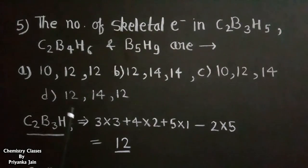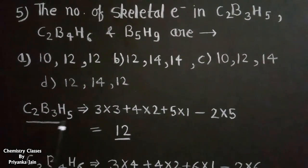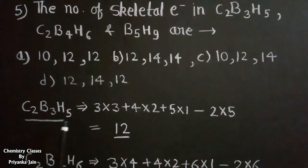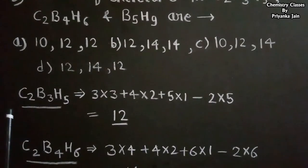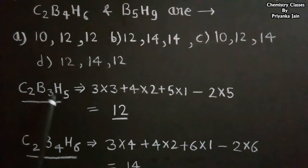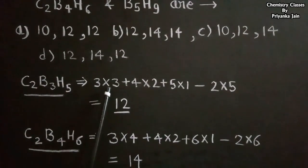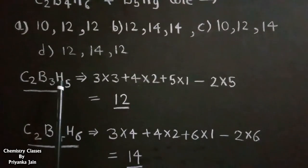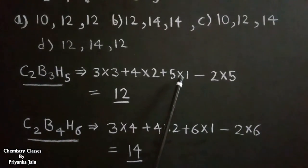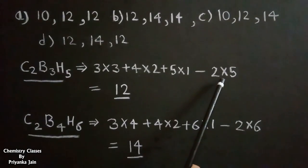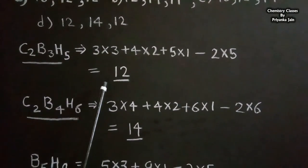We count skeletal electrons without dividing by 2. For C2B3H5: boron gives 3 electrons each (3×3), carbon gives 4 each (4×2), hydrogen gives 1 each (5×1), minus 2n where n = 2+3 = 5, so minus 2×5. Total skeletal electrons = 9 + 8 + 5 − 10 = 12.